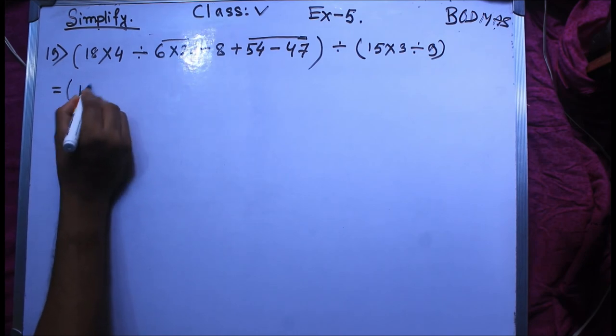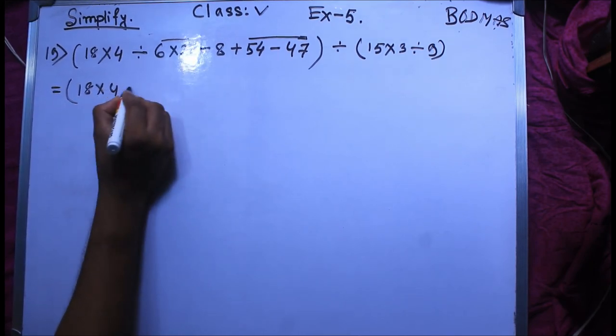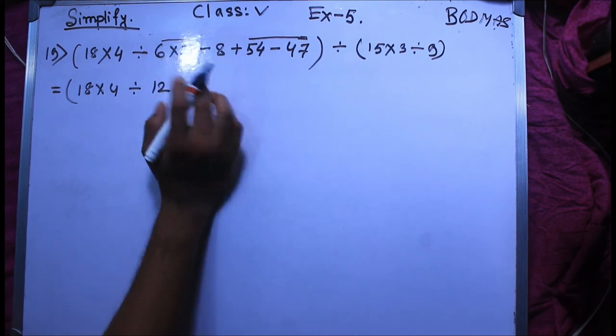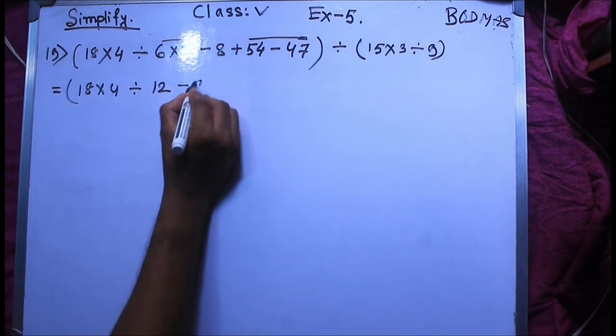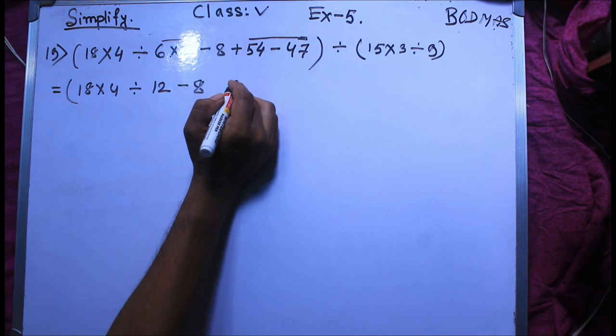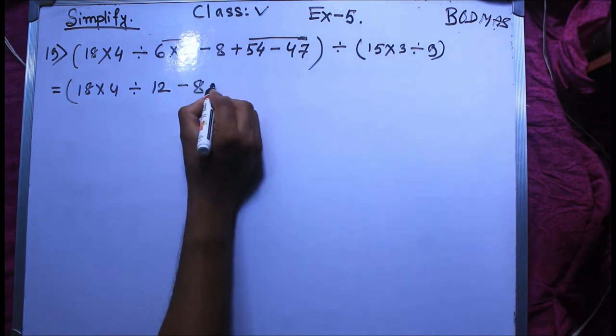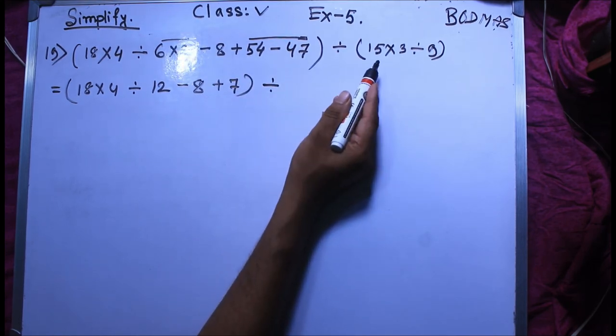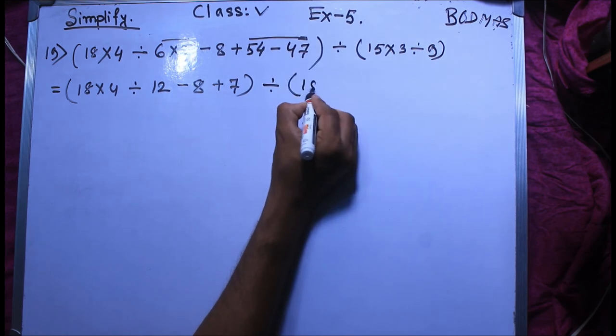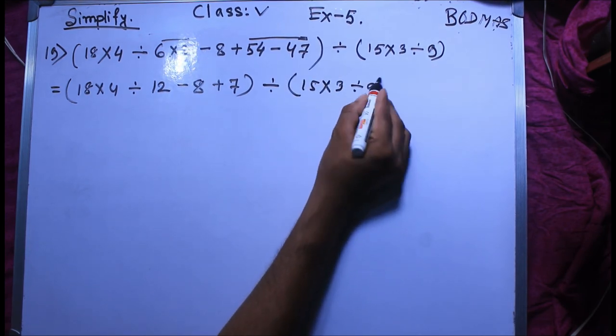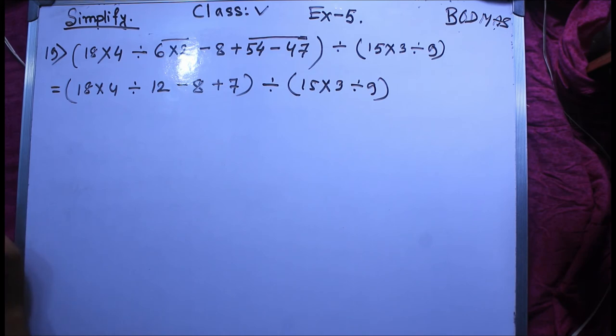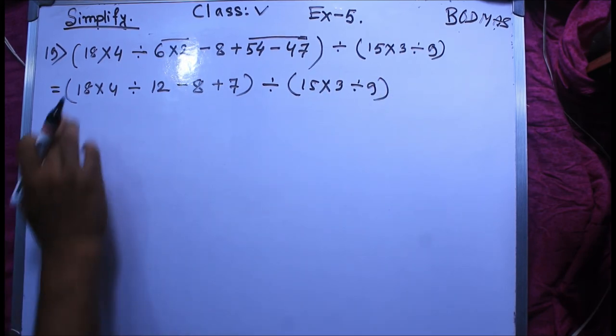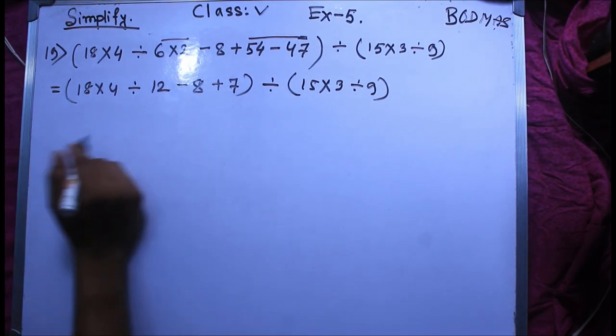18 into 4 divided by 12, 8 bracket divided by 6 minus 54 minus 47 is 7. First bracket 6 divided by 15 into 3 divided by 9, first bracket 6 divided by 9.